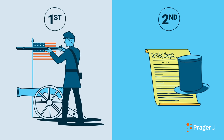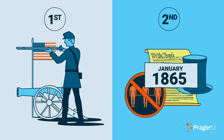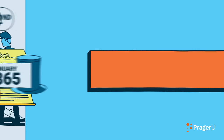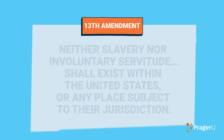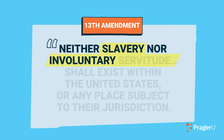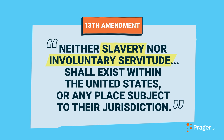And second, Lincoln would have to persuade the American people to amend the Constitution to ban slavery forever. In January 1865, with Lincoln's encouragement, Congress passed the 13th Amendment. The amendment proclaimed: "Neither slavery nor involuntary servitude shall exist within the United States or any place subject to their jurisdiction."